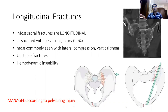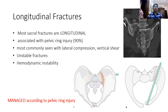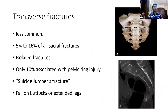Longitudinal fractures are the most common type — those we regularly see in practice. They are usually associated with pelvic ring injury, typically from a lateral compression or vertical shear mechanism of the pelvis. When the anterior ring disrupts, the posterior ring also disrupts — either through the sacroiliac joint or through a longitudinal fracture of the sacrum. These fractures are usually easy to diagnose on pelvic radiographs and are very unstable injuries with significant hemodynamic instability due to rupture of the pelvic veins.